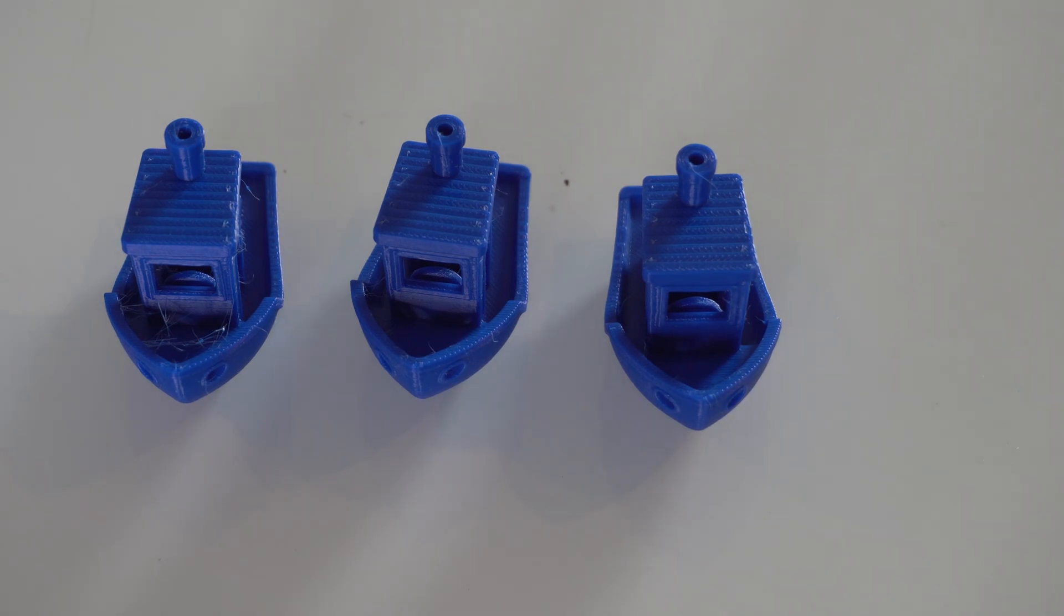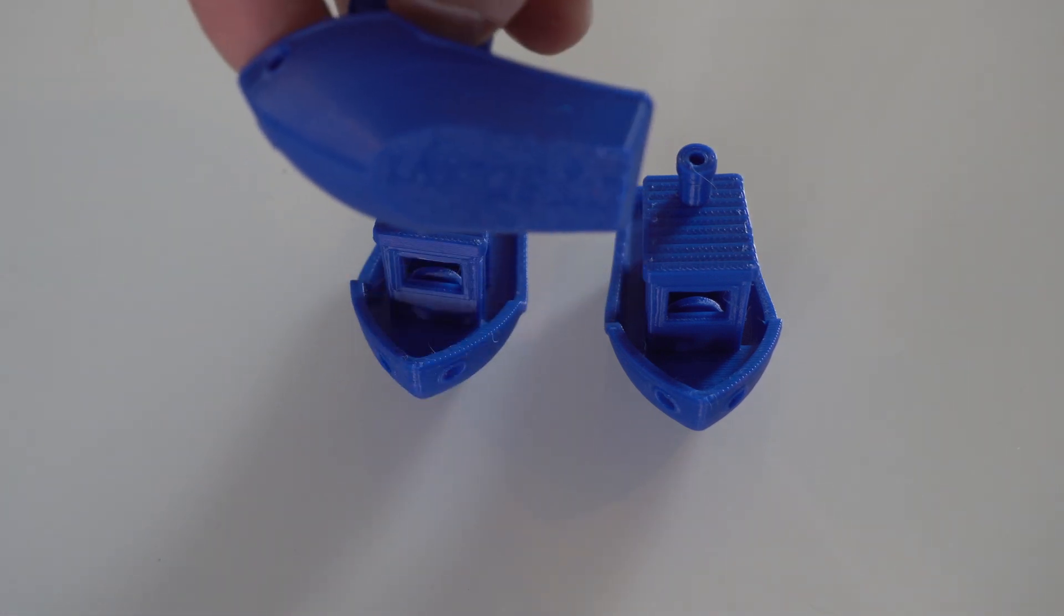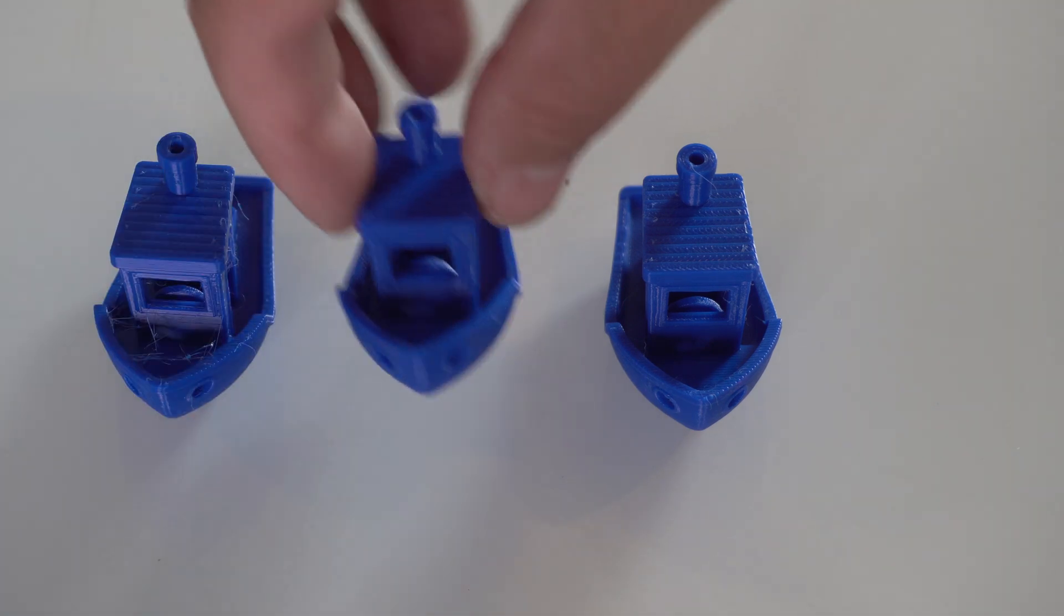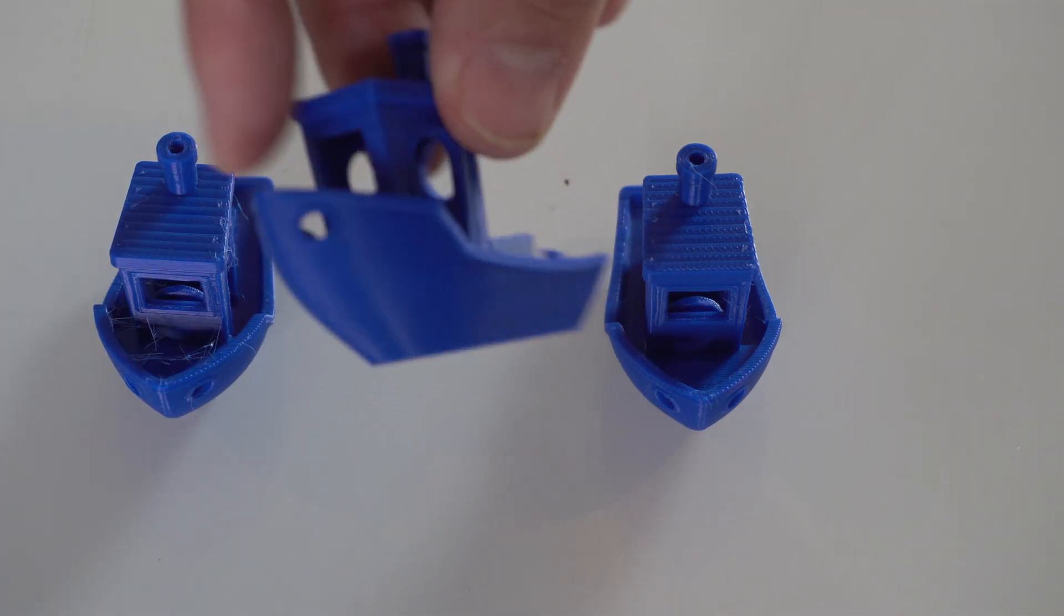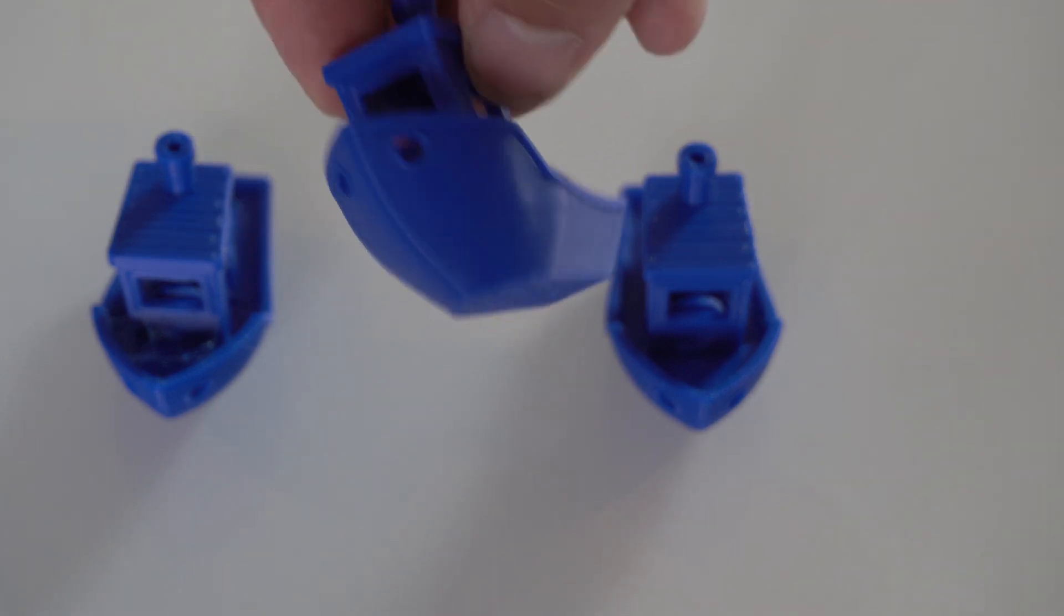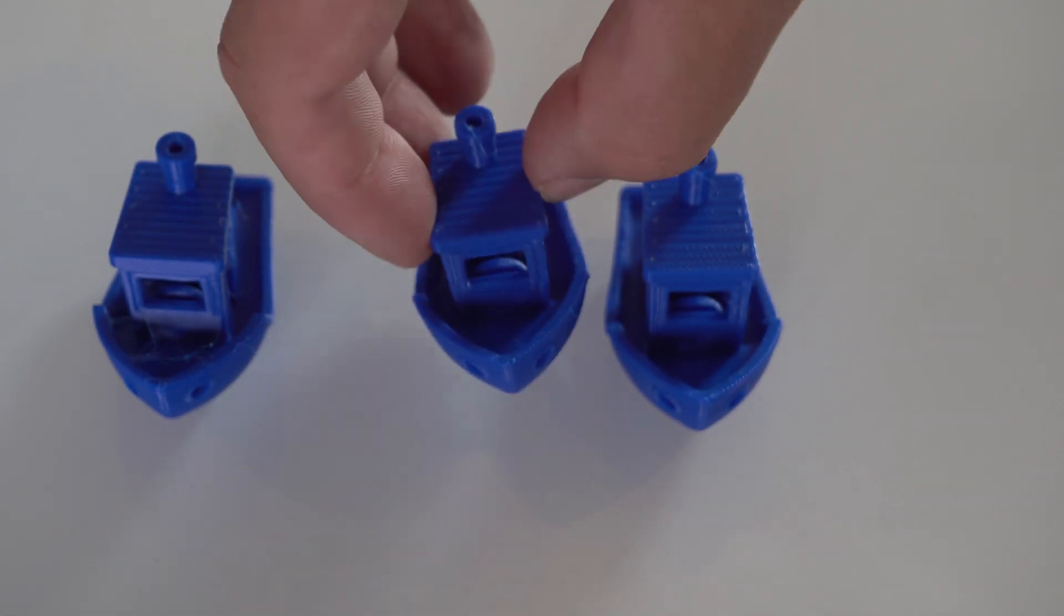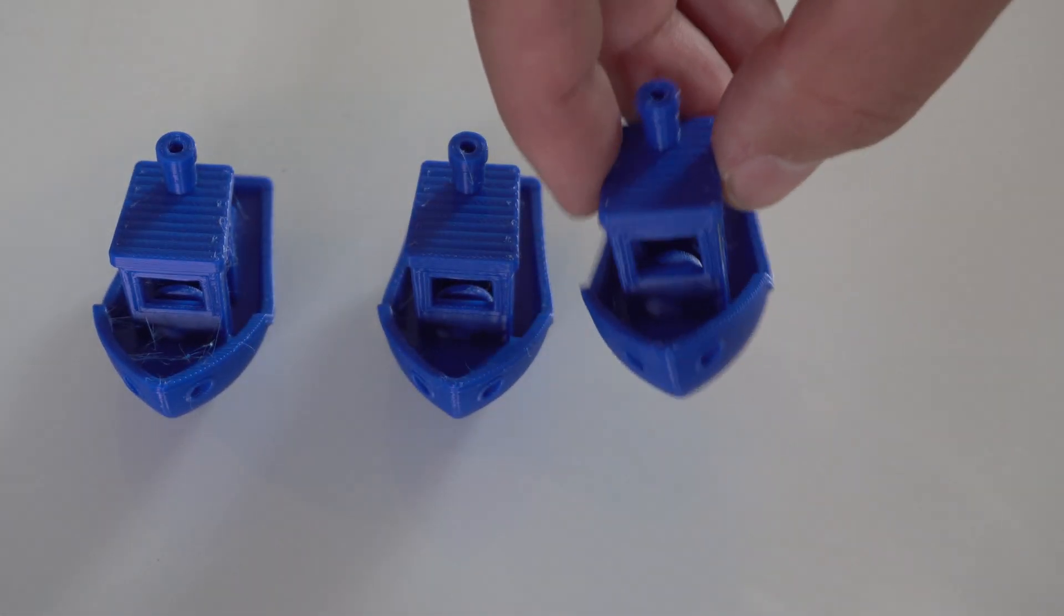Alright then zooming in as close as I can on these benches. The one here with no enclosure has a lot more stringing, just all around in general. The bottom does have the warps that we saw with the other prints as well. The 30 degree one here looks pretty good overall. I didn't see any real issues, not much stringing, the bottom looks pretty good.